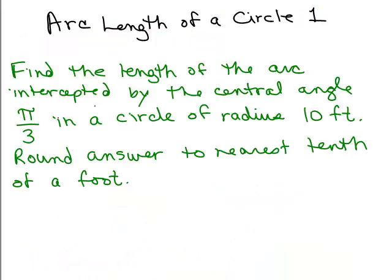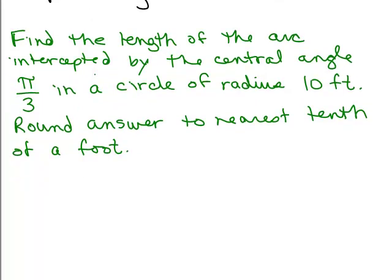So now find the length of an arc intercepted by the central angle pi over 3 in a circle of radius 10 feet. Well, let's get a picture of what's going on here. First, let's draw a picture.